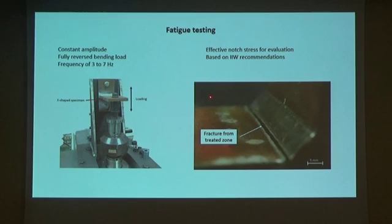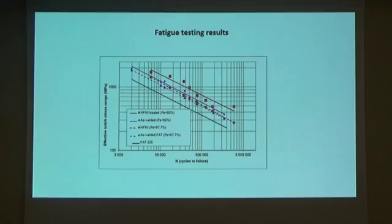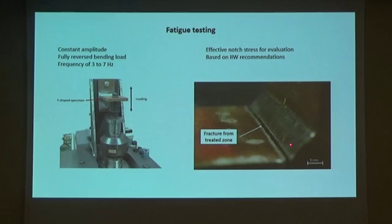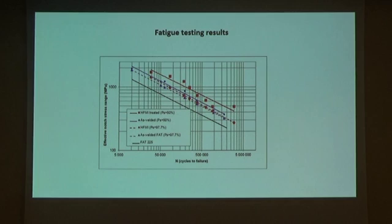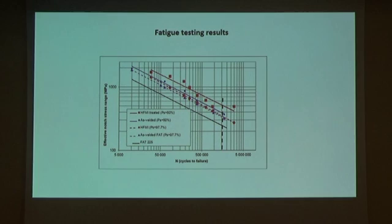Here you see an example of a welded component after fracture, where fracture occurred from the treated region. Comparing the fatigue testing results for as-welded and HFMI treated samples, and also comparing them with FAT 225 recommended by IIW for as-welded components — at 2 million cycles, we see a small increase in fatigue strength comparing characteristic values, and a somewhat bigger increase comparing mean values. We have about 26% increase in fatigue strength when performing HFMI treatment. The slope of the S-N curves is close to three.